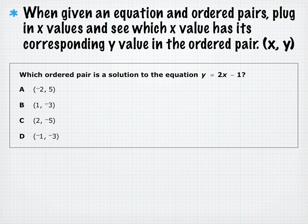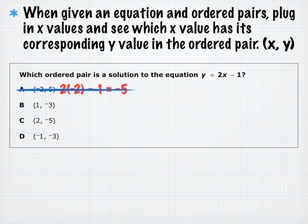This first example asks which ordered pair is the solution to Y equals 2X minus 1, given four ordered pairs A, B, C, and D. We plug in the X value from each and check the outcome. For A, the ordered pair is (negative 2, 5). Plugging in: 2 times negative 2 is negative 4, and negative 4 minus 1 is negative 5. We needed positive 5, so A is not a solution.